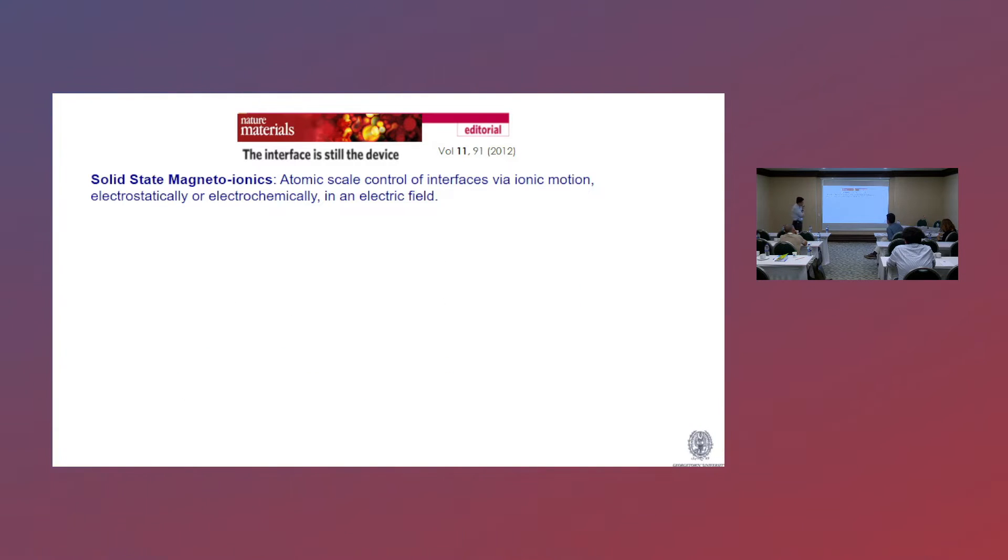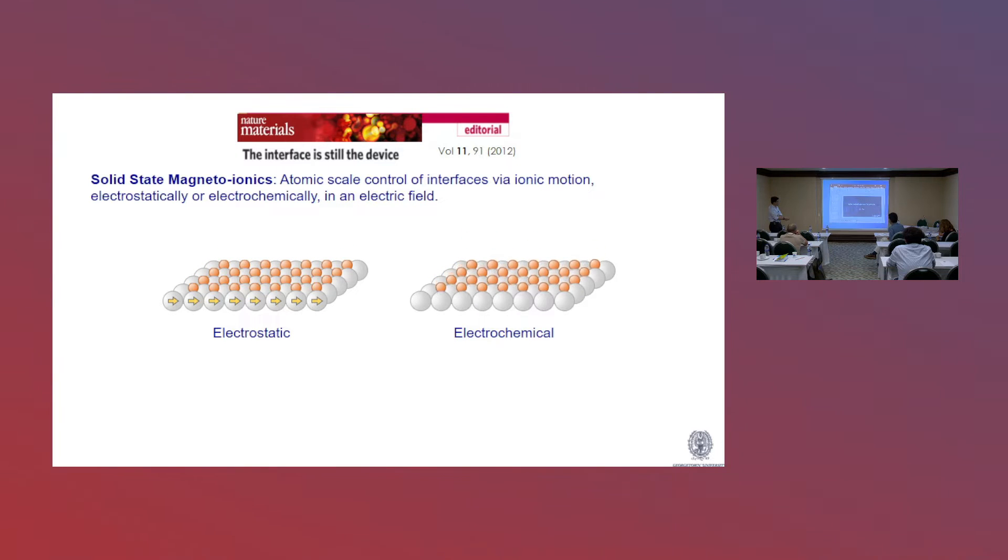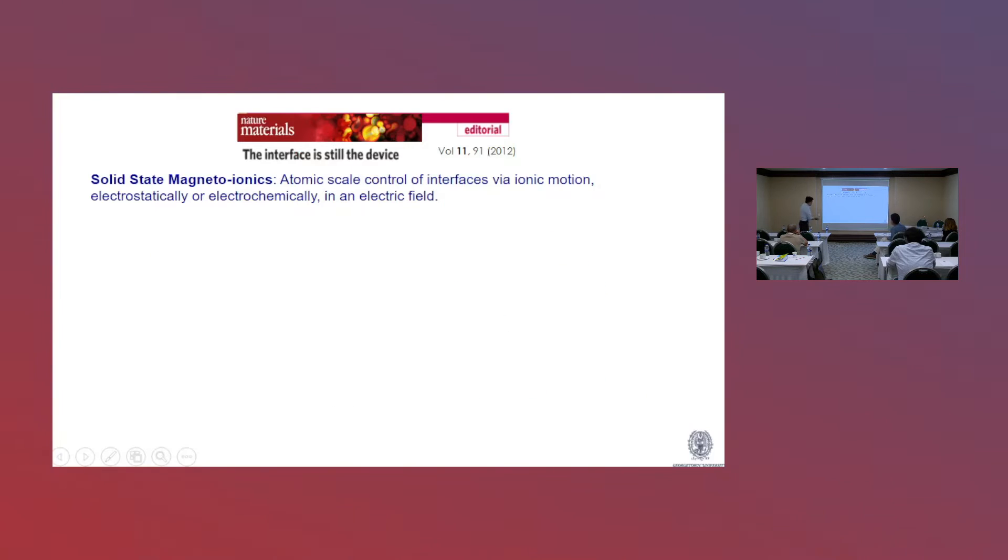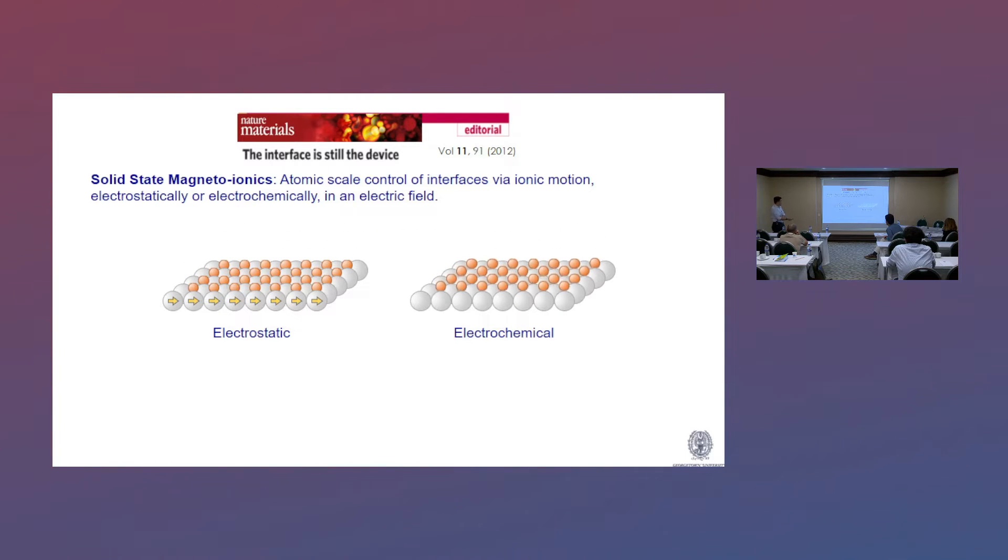So what we have been mostly interested in recently is the solid-state version of this magneto-ionics, which in essence is really atomic-scale control of the interfaces. And this can happen either electrostatically, which is limited to the interface, or electrochemically, where you transform the interface into something completely different. And this have led to many exciting results.